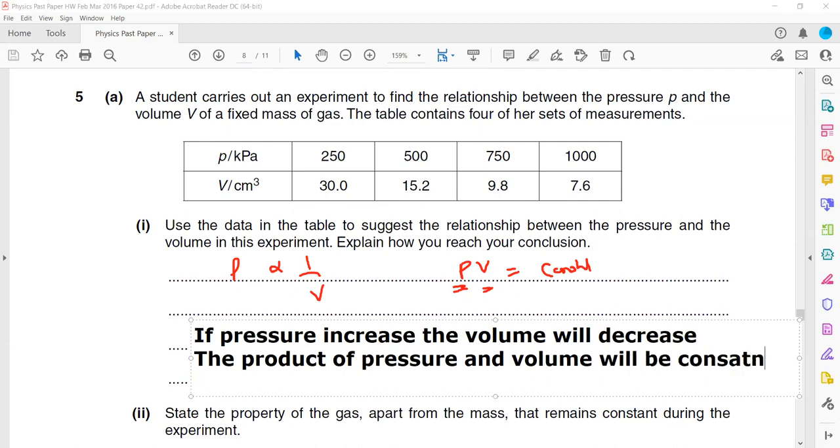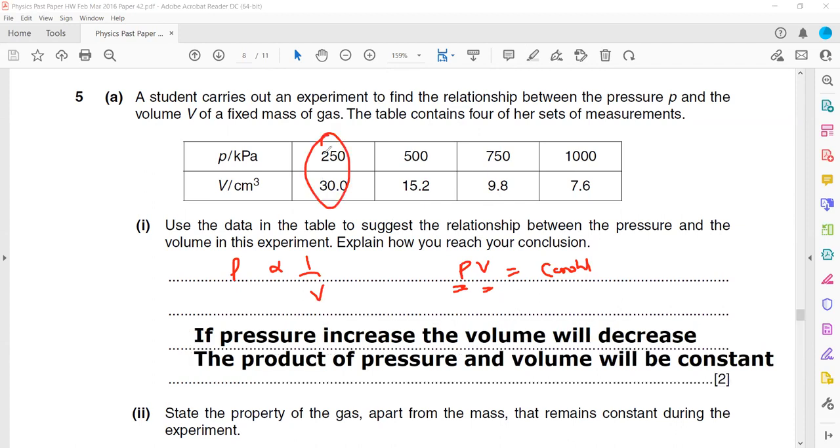And you can check this. Like, for example, if 250 multiplied by 30, that is 7500. When 500 multiplied by 15.2, that is 7600, approximately the same. 750 multiplied by 9.8 is 7350. 1000 multiplied by 7.6 is 7600. So approximately, whenever we multiply, because practically theory is something different, practical has many factors. So practically it will have a slight change, but theoretically it should always be the same.